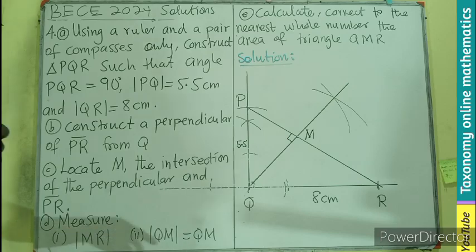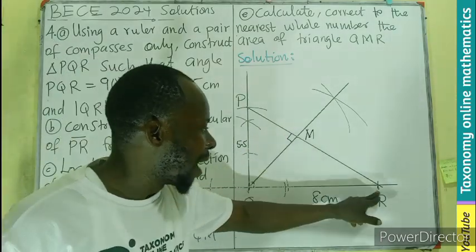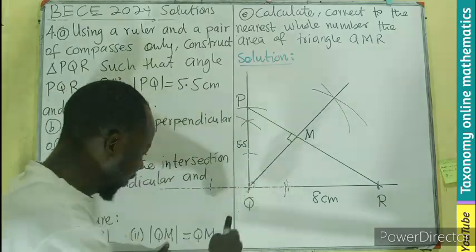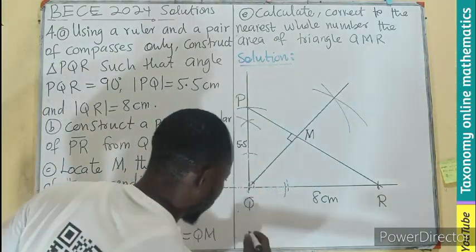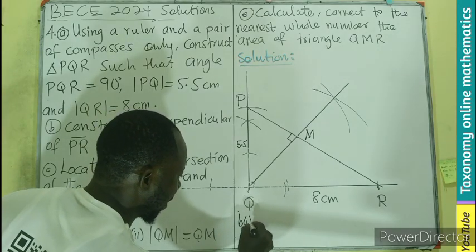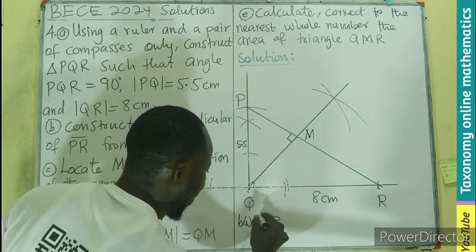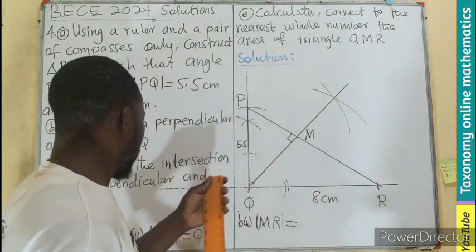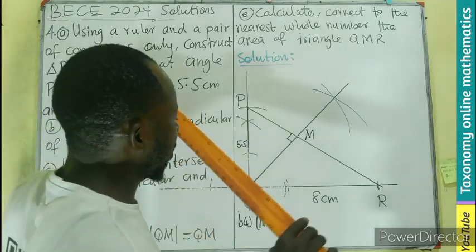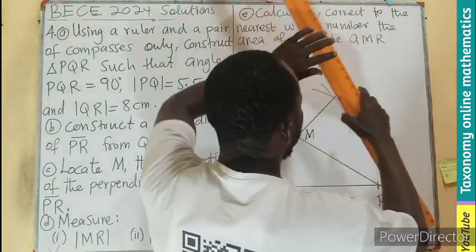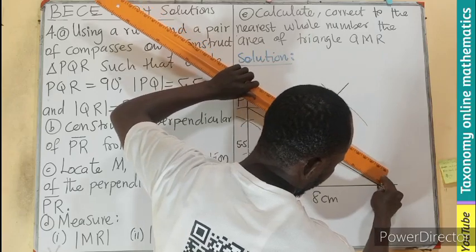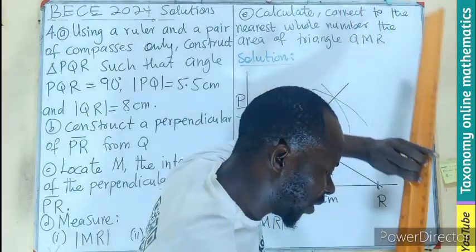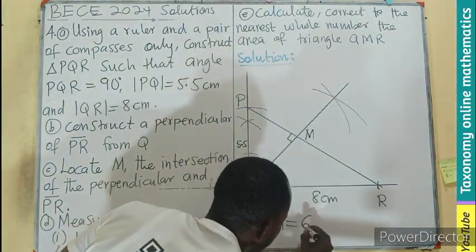What do we do next? We are to measure MR, then measure QM. So this and this is what we are asked to measure. So let's go, which is MR. By measurement, I am only going to have MR all the way. Let me turn it this way. So we have zero, 6 cm. So I will be having 6 cm.